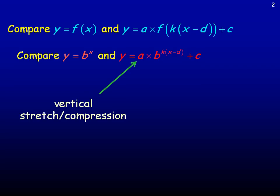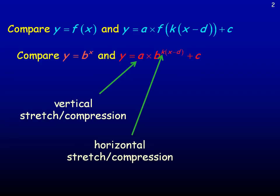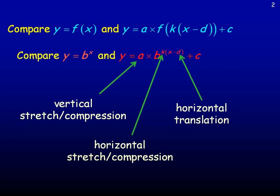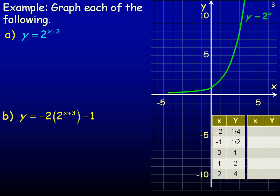The same thing is true with exponential functions. The a multiplied by b to the x is the vertical stretch or compression depending on the size of a. The k multiplied by x is a horizontal stretch or compression depending on the size of k. The d is a horizontal translation depending on whether it's positive or negative, and c is a vertical translation. These are the same transformations as in previous study, and we'll use them on pages 3 and 4 to graph four different examples.